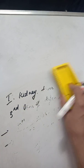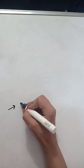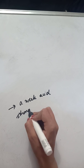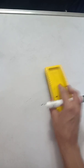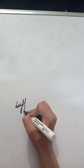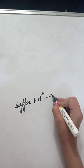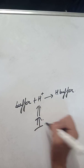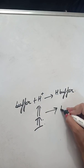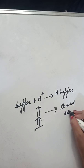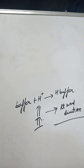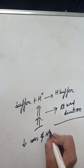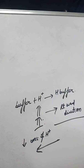A buffer is defined as a weak acid and its salt with a strong base. Buffer plus hydrogen ion forms H-buffer. If hydrogen ion is added to the solution, the reaction moves in the rightward direction and the concentration of free hydrogen decreases in the solution. If there is decreased concentration of hydrogen in the solution, the reaction shifts towards the left.